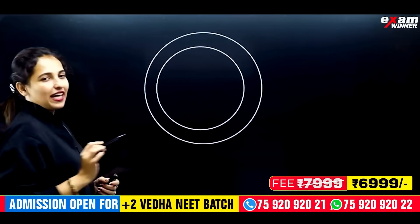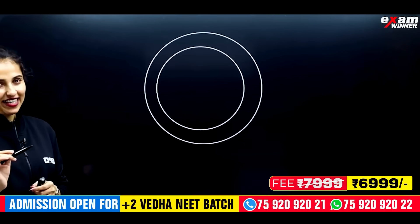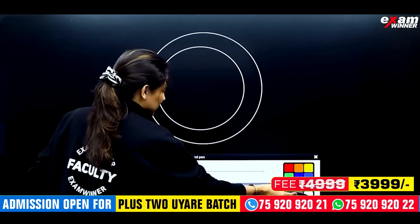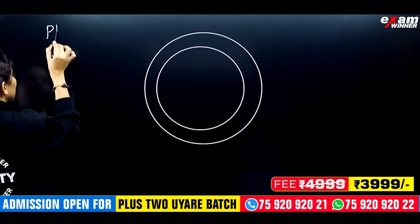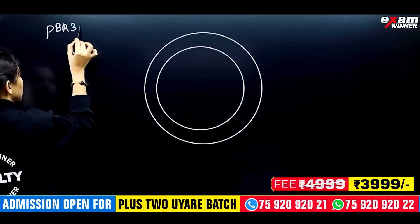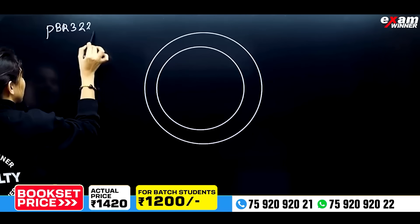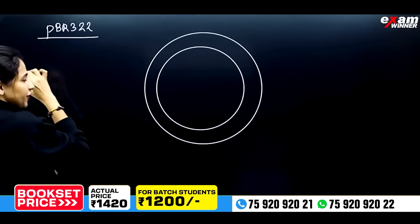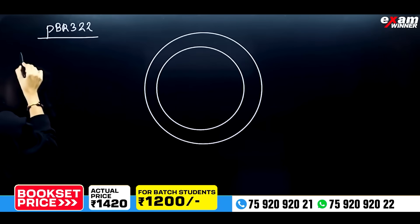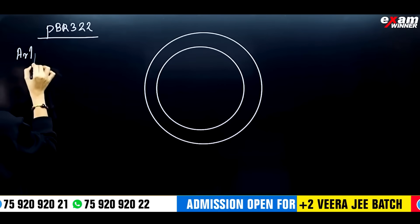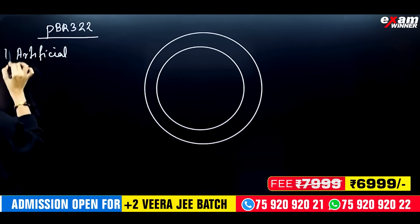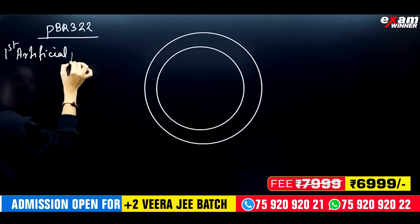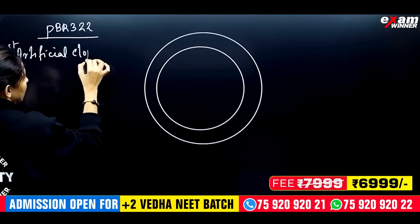You will be able to see this one. So what is it? It is called PBR322 — the first artificial cloning vector. PBR322 is the first artificial cloning vector.